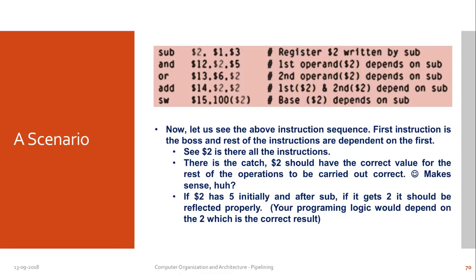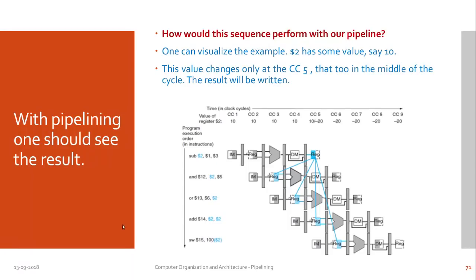The programming logic is written expecting correct data only — you would not have considered that stale, non-updated data would be sent for further processing. Because of pipelining, the next instruction starts executing before the first instruction finishes, so it may retain the older value or get a wrong value — not what you expect. For visualization: $2 holds value 10 in clock cycles 1 through 4. Only at the midway of clock cycle 5, through the write-back stage, is the register correctly updated to -20. The change happens exactly at clock cycle 5, and up until clock cycle 4, $2 still holds 10.